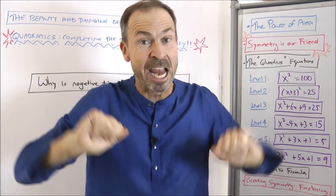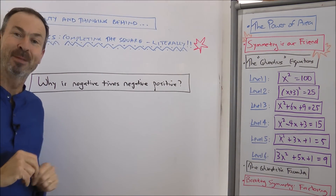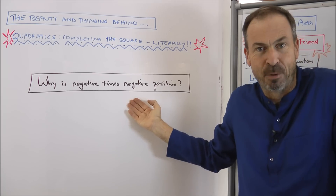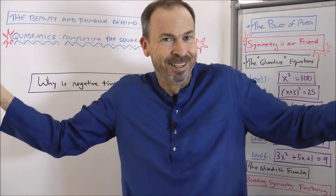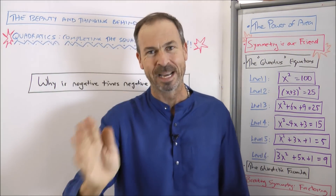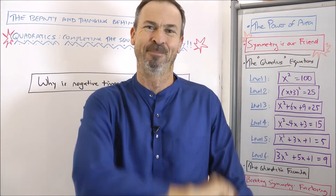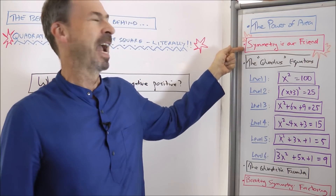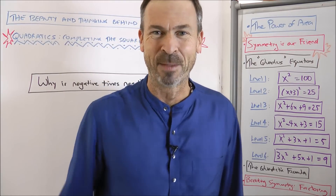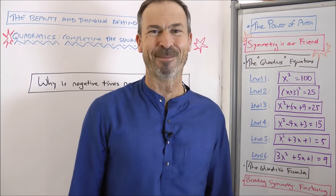To motivate the story of area, I'm going to ask an age-old puzzle: why is negative times negative positive? I know we've all been trained to say it just is, but I want an actual mathematical reason. The power of area and the power of symmetry — symmetry is our friend. Let's get cracking, because this is the story of quadratics.